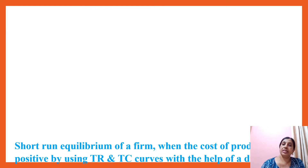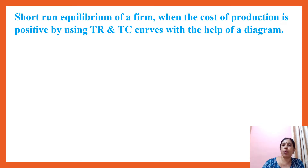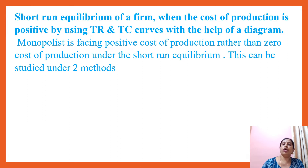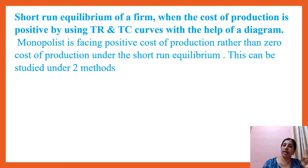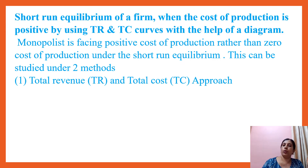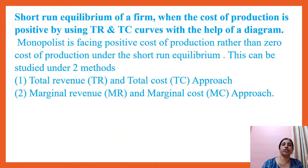When a firm faces a positive cost of production, this can be studied with two approaches. One is the TRTC approach, and another one is the MR and MC approach. TRTC approach is important for six marks. One is the total revenue and total cost approach; another one is the marginal revenue and marginal cost approach.